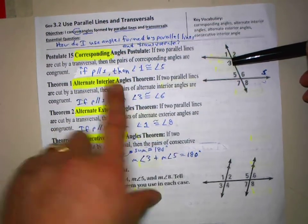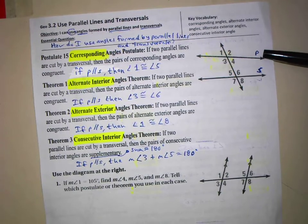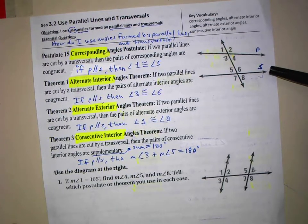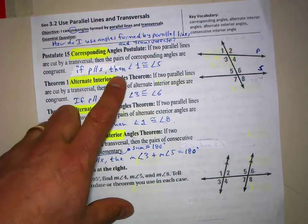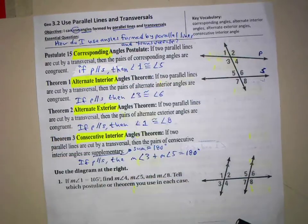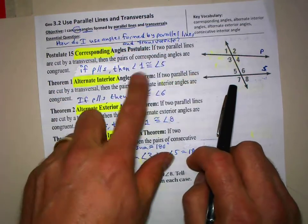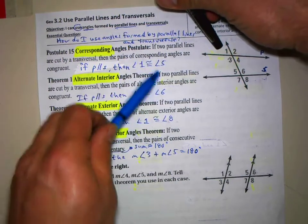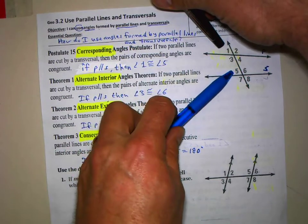What this postulate is saying is — make sure you label on your diagram — this is line P (lowercase italics P) and this is line S (lowercase italics). So if line P is parallel to line S, then all the corresponding angles are going to be congruent. Angles 3 and 7 are congruent, or as written here, angle 1 (top left) is congruent — the symbol is an equal sign with a squiggle on top — to angle 5.